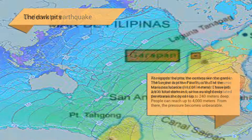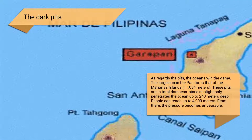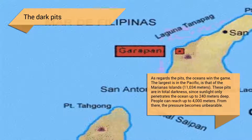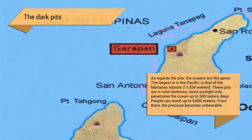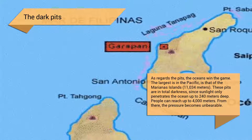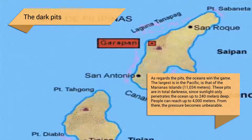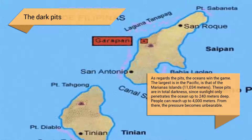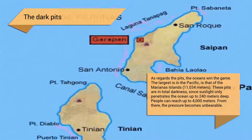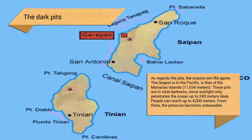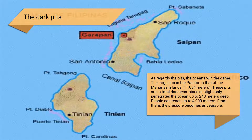The largest ocean pit is in the Pacific: the Mariana Trench at 11,034 meters. These pits are in total darkness since sunlight only penetrates the ocean up to 240 meters deep. People can reach up to 4,000 meters, but from there the pressure becomes unbearable.